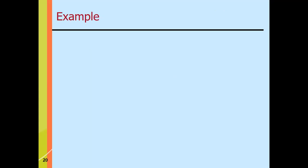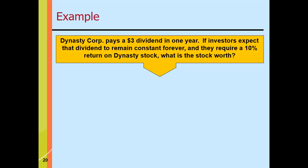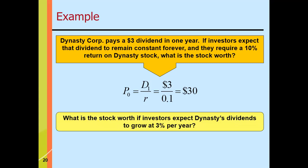For example, Dynasty Corporation pays a $3 dividend in one year and the required rate of return is 10%. If there is zero growth, then P sub zero equals $3 divided by 0.10, which equals $30 — the value of the stock.